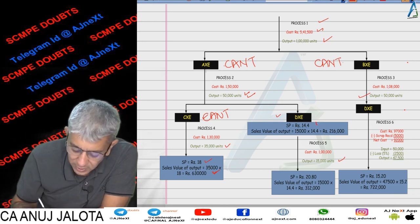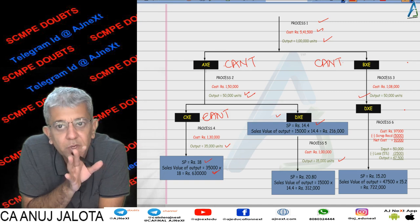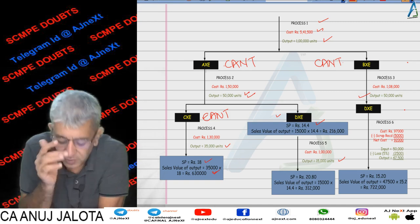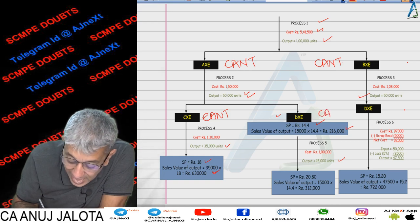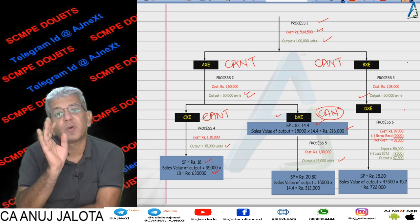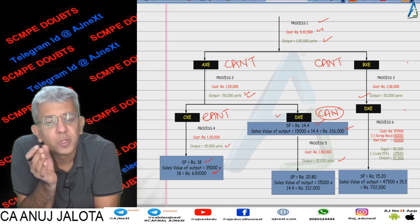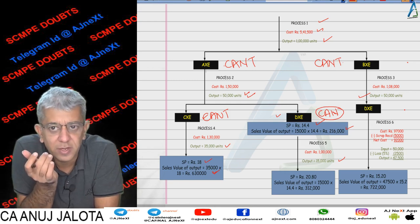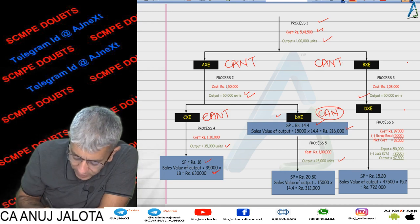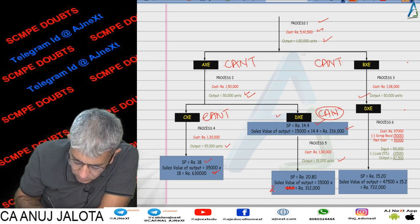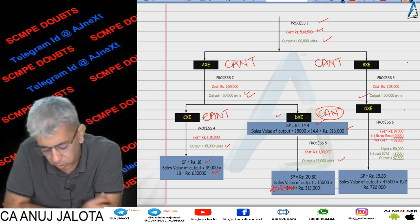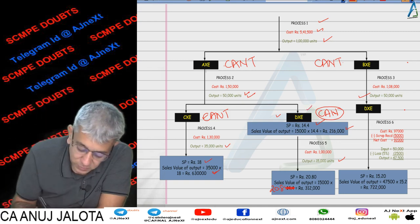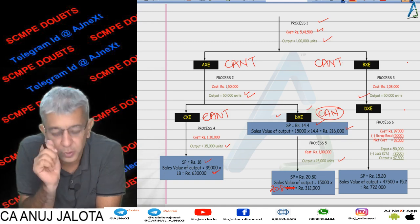For DXC there are two options. Either you sell it at the split-off point at ₹14.4, so 14.4 × 15,000 = ₹2,16,000 sales value. Or there is Option 2: take it to Process 5, which costs ₹1 lakh, and then sell at ₹20.8 — so 15,000 × 20.8 = ₹3,12,000. So DXC can be sold at the split-off point or processed further.